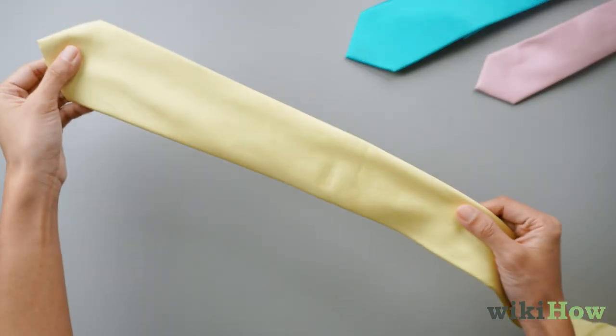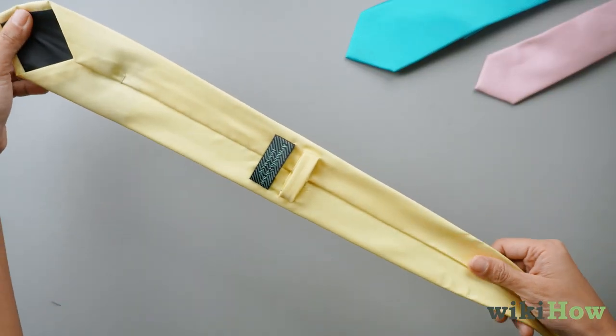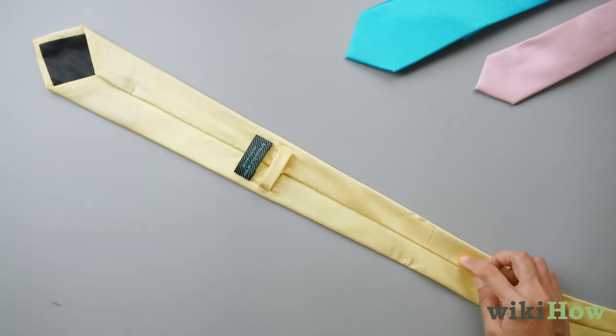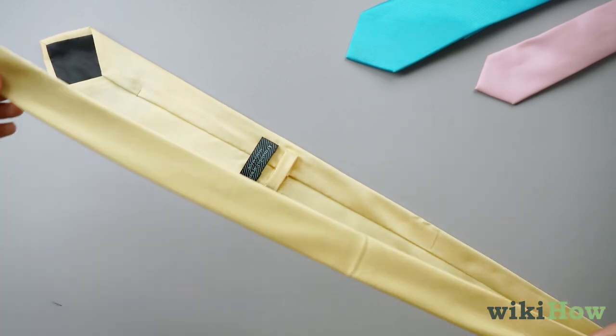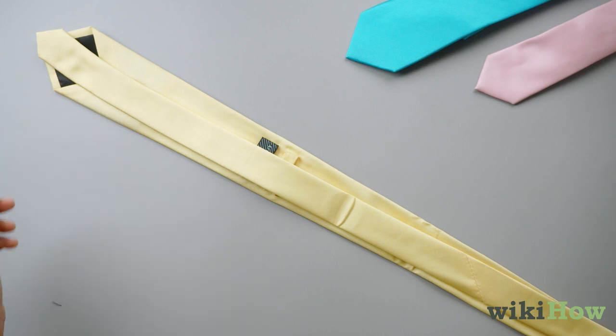Take the tie and lay it down on a clean, flat surface with the front of the tie facing down. Then, fold the tie in half from end to end.